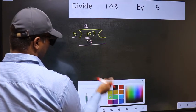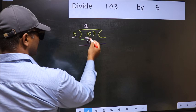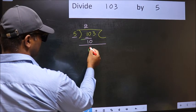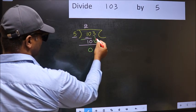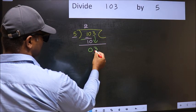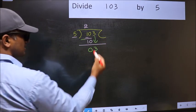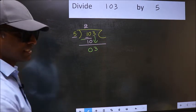Now you should subtract. 10 minus 10, 0. After this, bring down the beside number. So 3 down. After this step, the mistake happens.